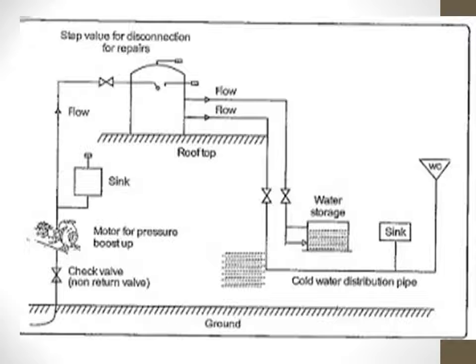Here is a diagram to understand raising mains and cold water flow. On the top left side, on the rooftop, there is a storage tank. On the ground floor there is another storage tank on the right-hand side. We can use that water for sink or WC.